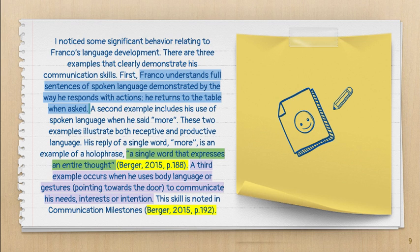In blue, you can see what the student learned from their observations. In green, what they learned from the textbook. In lilac, what they integrated from the text into their own learning. And finally, in yellow, their citations giving credit to the source.